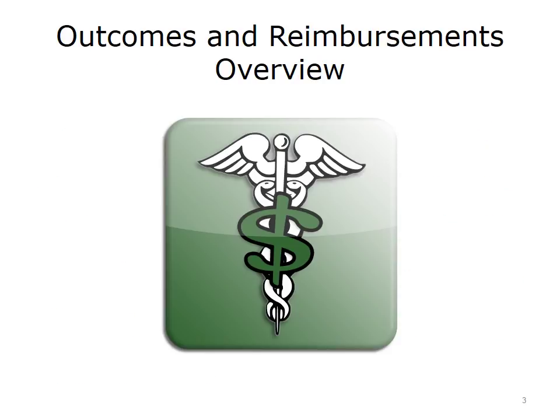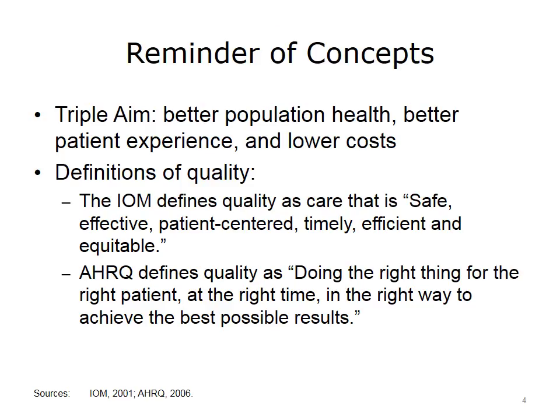The models described in this lecture include a broad set of performance-based payment strategies that link financial incentives to providers' performance using defined measures to achieve better value through improvements in quality and slowing the growth and decreasing health care costs in health care spending. As a reminder from earlier lectures, ACOs and other value-based care models are meant to reward value and to achieve the triple aim of better population health, better patient experience, and lower costs.